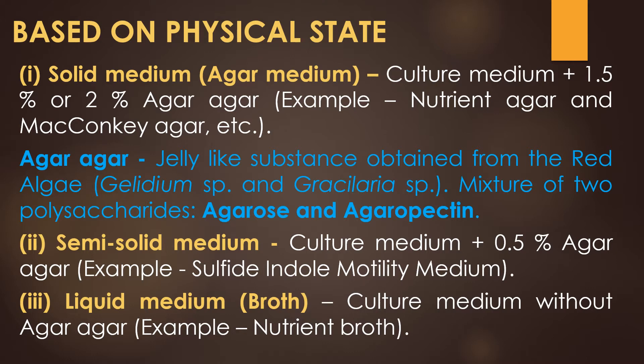Agar agar is a jelly-like substance obtained from the red algae Gelidium species and Gracilaria species. It is a mixture of two polysaccharides — agarose and agar pectin. The semi-solid medium contains 0.5% agar agar; an example is sulphide indole motility medium. The liquid medium or broth contains no agar agar; an example is nutrient broth.